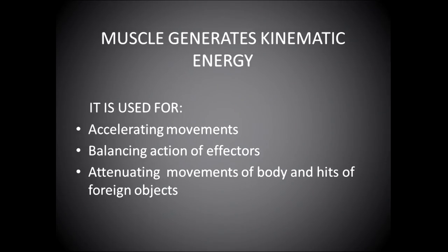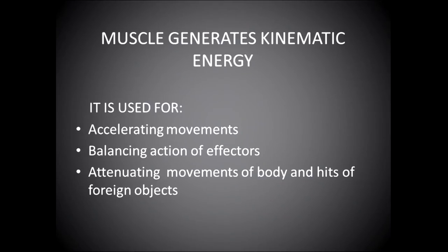Muscles generate kinetic energy and are used to accelerate the movement, which gives the velocity of the javelin. But when the effector muscles are working, we also need muscles which balance the movement chain — they are opposing, acting, and side-working muscles. The attenuating movements of the body are also needed, as well as absorbing hits against the body or extremities. All these are important muscle functions.